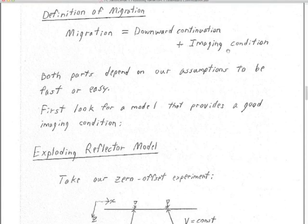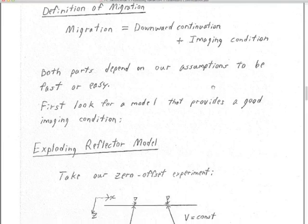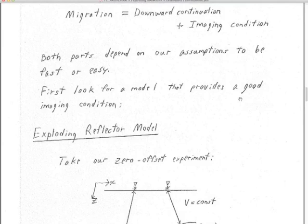We'll also see that migration can be incredibly simple. We're going to start with the assumptions that let it be fast and easy. It could be as simple as picking up the amplitude of the time trace at the time given by the imaging condition, where the imaging condition can be very simple spherical propagation. There are always these two parts, and in the next few weeks we're going to see four or five different ways of implementing the downward continuation. We'll stick with one imaging condition.